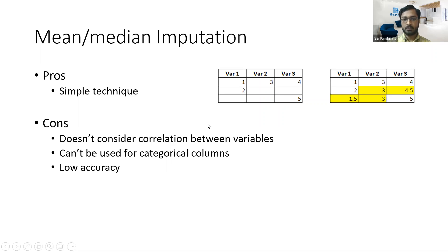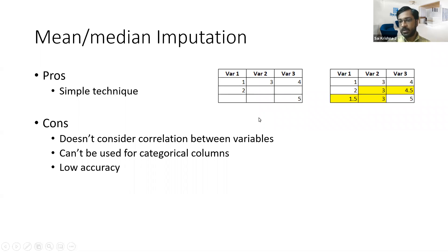It also has low accuracy. If there are outliers in the data, or extremely high or extremely low values, that could impact your mean heavily and the accuracy of the model can reduce. That is the mean or median imputation technique.